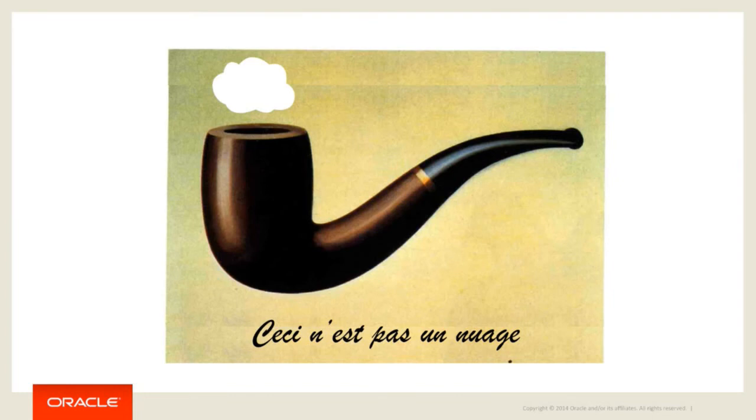This is not a cloud. I'm going to talk a little bit about a specific aspect of cloud today. Cloud means a lot of things to a lot of people. At Oracle today, it's gotten fairly confusing because everything we do is apparently cloud, so we need some nomenclature within that to figure out what's going on.